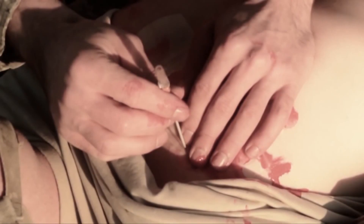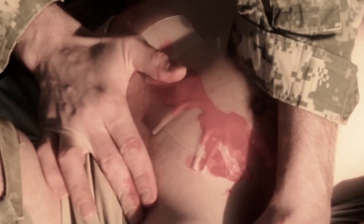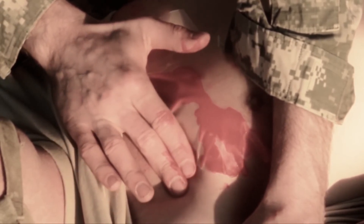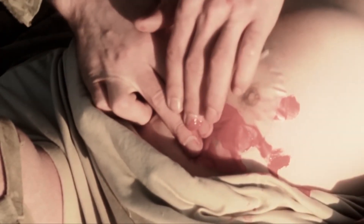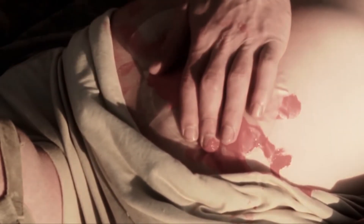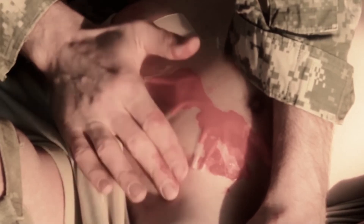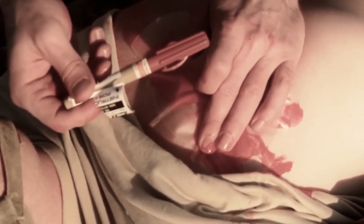If you have determined the casualty suffers from tension pneumothorax, you will need to perform a needle chest decompression. You will need a large bore needle and catheter unit, 14 gauge by 3.25 inches long from your aid bag. Locate the insertion site — it is located in the second intercostal space, the area between the second and third ribs counting from the top, at the mid-clavicular line: an imaginary line perpendicular to the ribs, approximately in line with the casualty's nipple, on the same side of the chest as the injury. A simple way to find the second intercostal space is to put two fingers together and slide them from the chest wall until they bump into the bottom of the clavicle. Place the needle catheter just below your fingers and you should be in the second intercostal space.